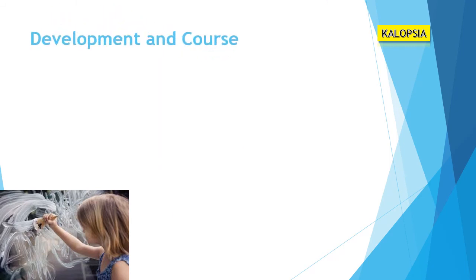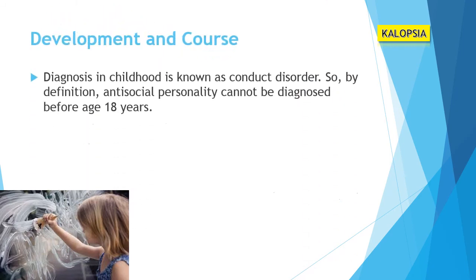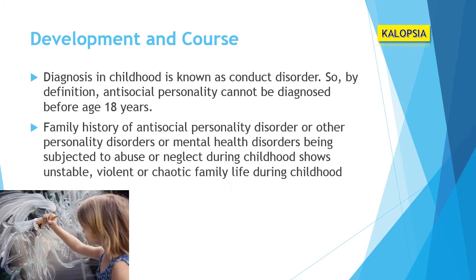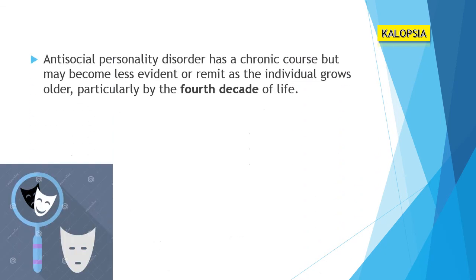Now let's see the development and causes of antisocial personality disorder. Diagnosis in childhood is known as conduct disorder, so by definition antisocial personality disorder cannot be diagnosed before age 18 years. Risk factors include family history of antisocial personality disorder or other personality or mental health disorders, being subjected to abuse or neglect during childhood, and unstable, violent, or chaotic family life during childhood. ASPD has a chronic course but may become less evident or remit as the individual grows older, particularly by the fourth decade of life.